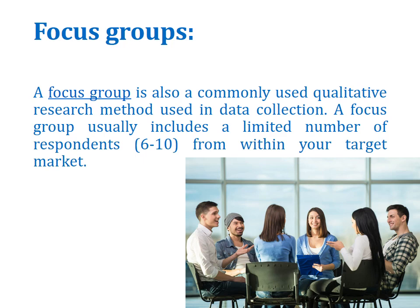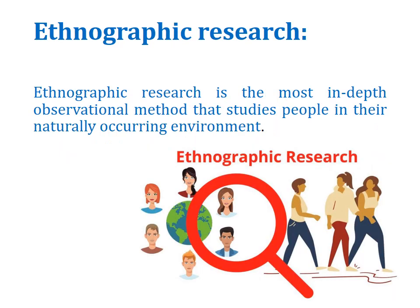A focus group usually includes a limited number of persons — typically six to ten — from your target group. This is not a very hard and fast rule, but groups of six to ten people are manageable, allowing you to easily collect qualitative data. Ethnographic research is also a qualitative method.